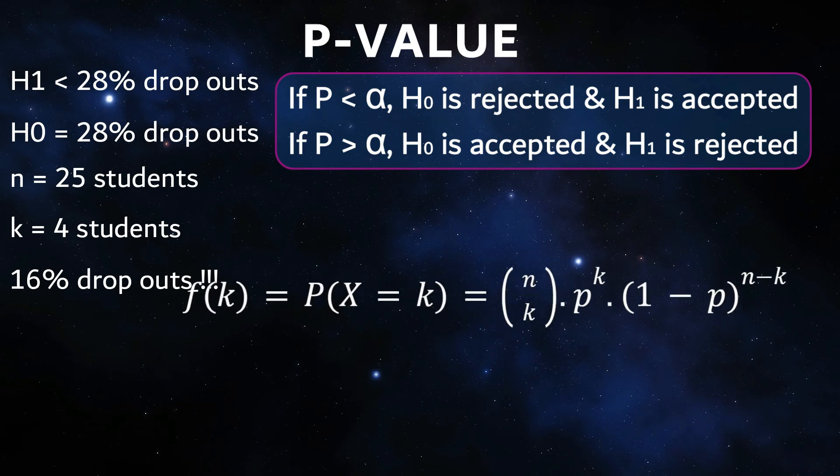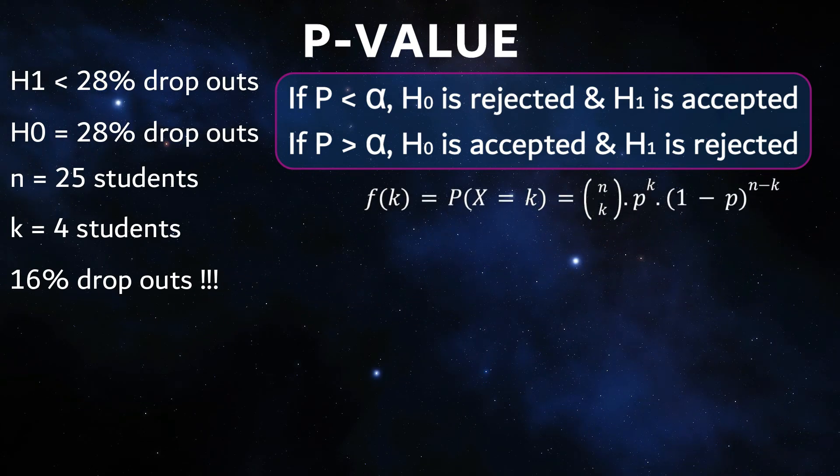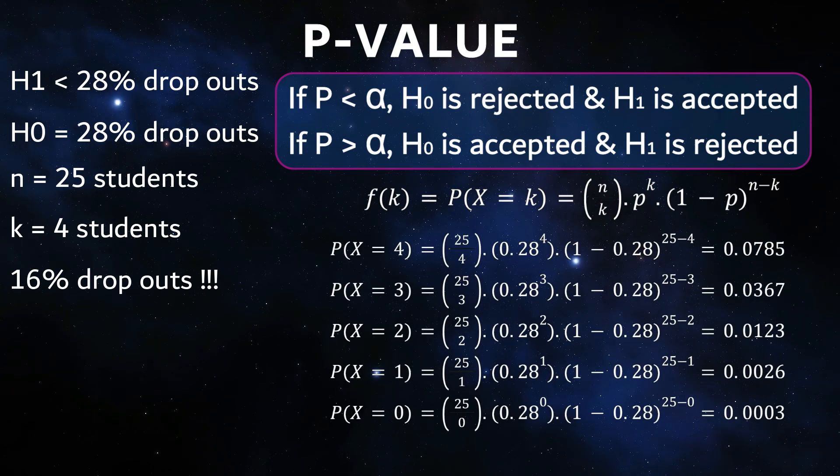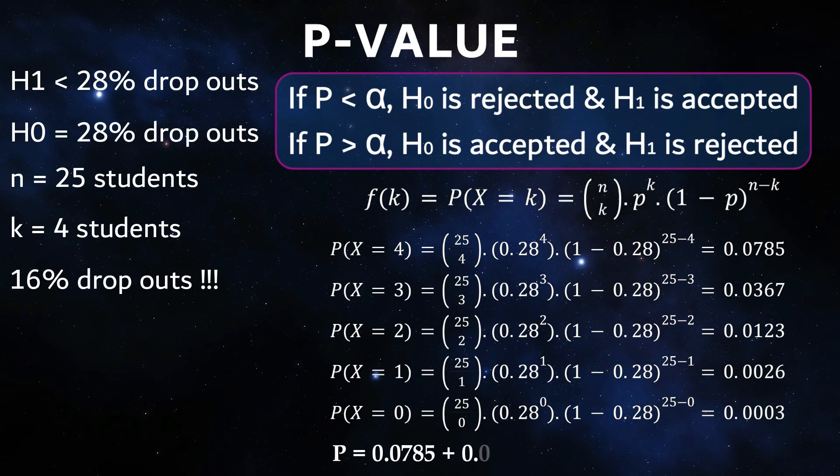So first we calculate the individual probabilities for all values: 4, 3, 2, 1, or 0. Now you just add all the results together for the final p-value.